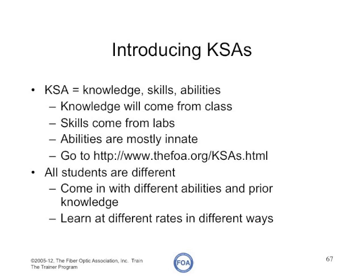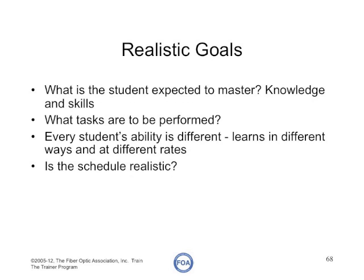You can go to the FOA website and read where all the KSAs are for the various courses. Remember that all students are different — they come with different abilities and different prior knowledge, and they learn at different rates in different ways, and your class must be able to accommodate them. You need to set realistic goals for the class: what is the student expected to master? The knowledge, the skills — the KSAs that the FOA has developed.